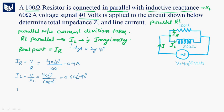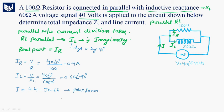Now the total current I equals 0.4 minus j0.66, where 0.4 is the real part and 0.66 is the imaginary part. Expressing this in polar form, the total current I equals 0.77∠-58.78° amperes.